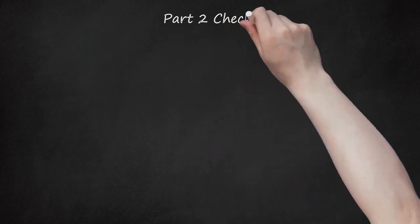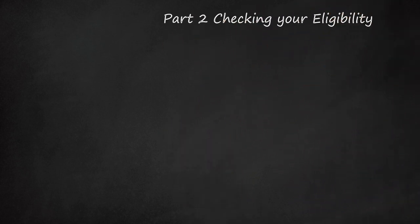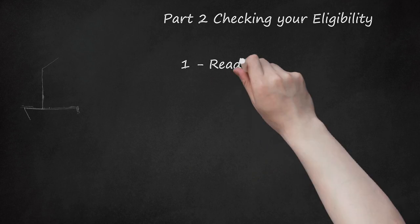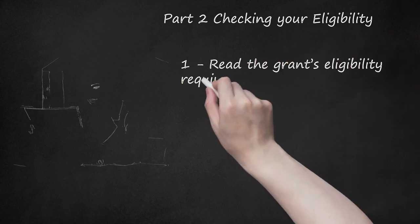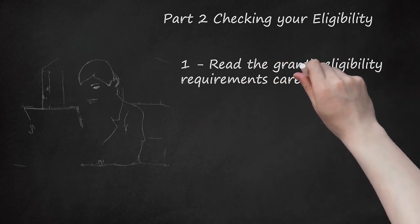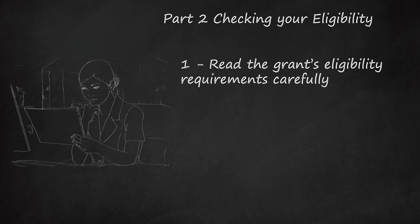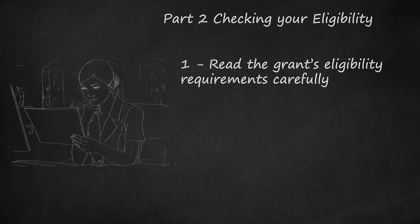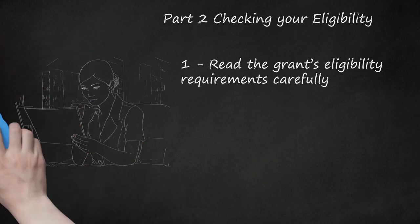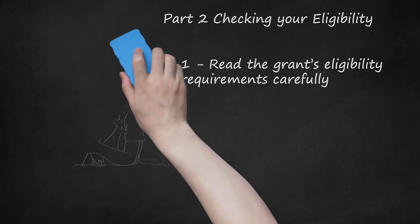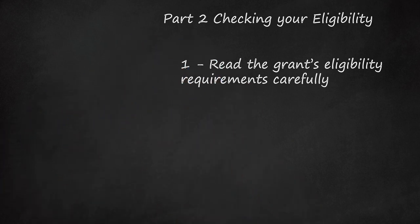Part 2: Checking Your Eligibility. Step 1: Read the grant's eligibility requirements carefully. Every grant is different, and each grant will say somewhere in the application information what type of organization is eligible to apply for the grant. Be sure to read the description of the grant carefully so you do not waste time applying for something that you cannot get.